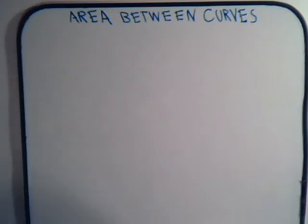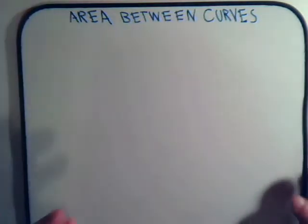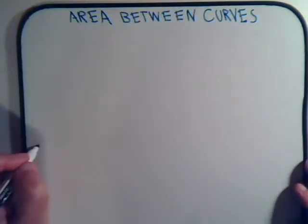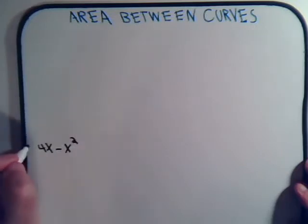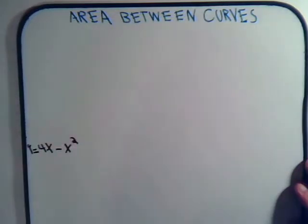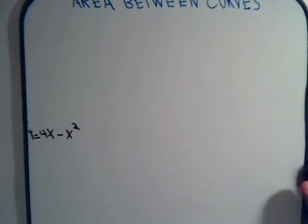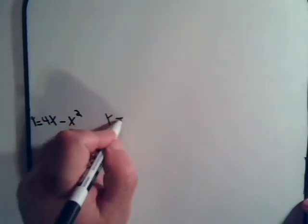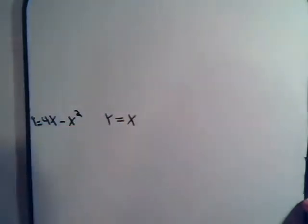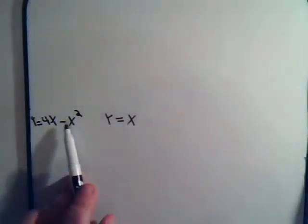Okay, let's say that we have a curve, its equation is 4x minus x squared. And we have a straight line, y equals x. We want to find the region in between this straight line and this curve, and we want to find the area of that region.